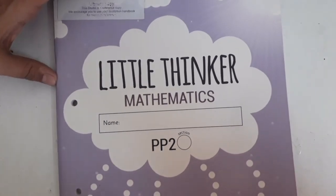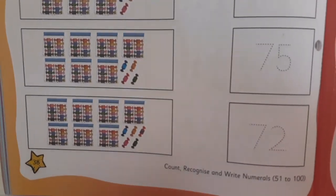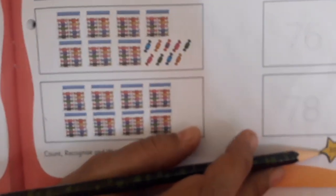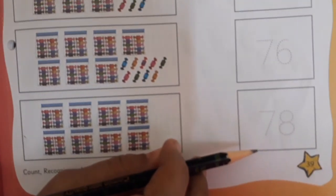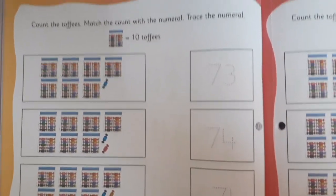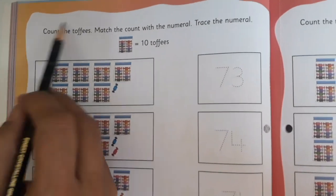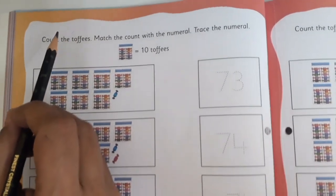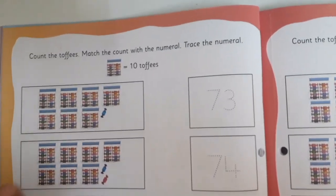Let's open Little Thinker Mathematics. We are going to open page number 38 and 39. So here we are going to count the toffees and match the count with the numerals. First of all, you are going to write today's date.